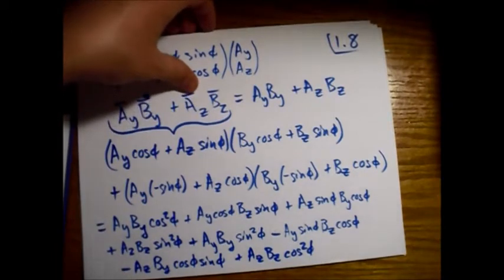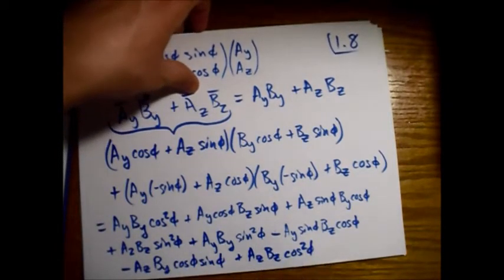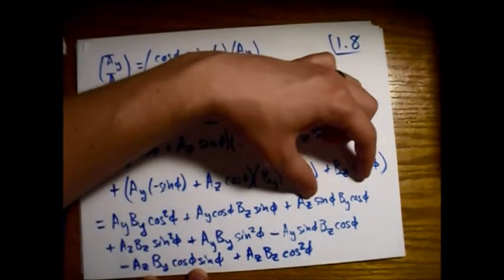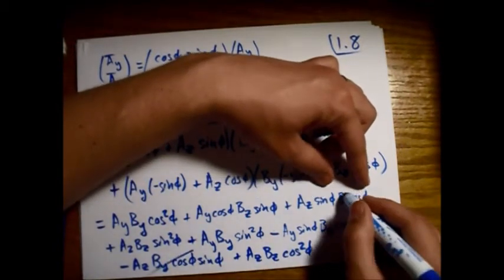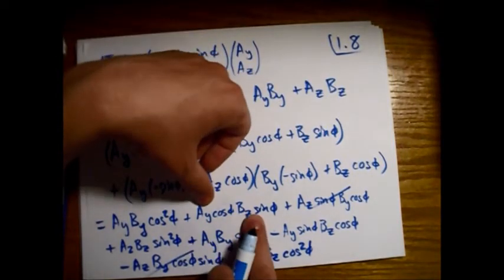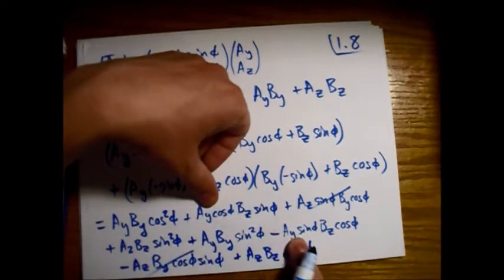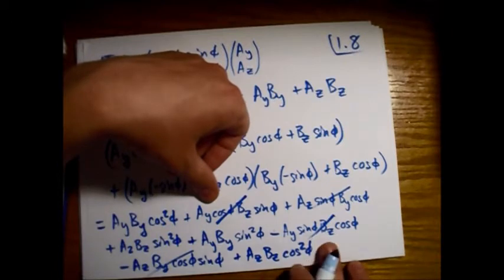Alright, so now we find how they will cancel out. So we have this A_z B_y sine φ cosine φ. And here's an A_z B_y sine φ cosine φ. So this one and this one will go away. A_y B_z sine φ cosine φ. And A_y B_z. So this one minus sine. We'll subtract out and cancel with that one.